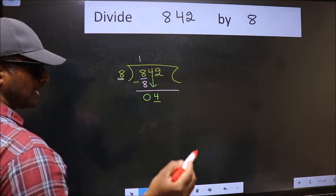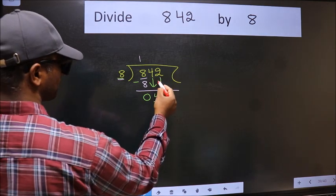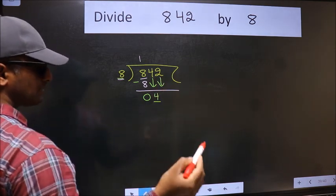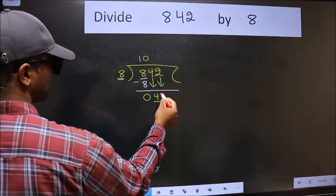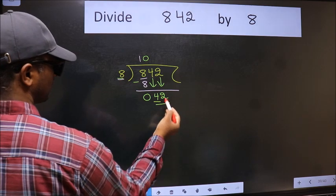So we should bring down the second number. And the rule to bring down second number is we should put 0 here. Then only we can bring this number down. Now 42.